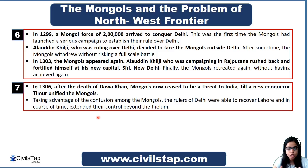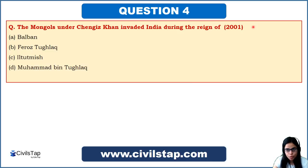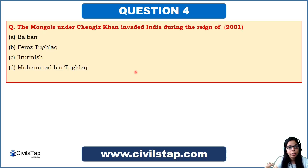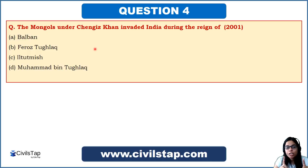A question from the 2001 prelims asks: the Mongols under Changez Khan invaded India during the reign of — Balban, Firoz Shah Tughlaq, Iltutmish, or Muhammad bin Tughlaq? The answer is clearly Iltutmish. This question can be tricky because Mongols also invaded during Alauddin Khilji and Jalaluddin Khilji's time, but those invasions were not led by Changez Khan. The key word here is Changez Khan — he attacked during the time of Iltutmish. So the answer is option C.